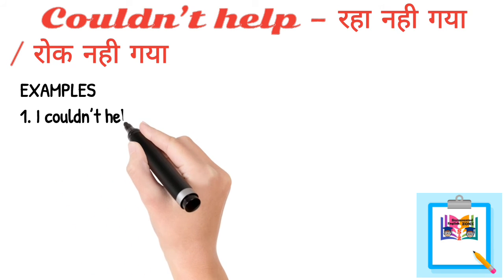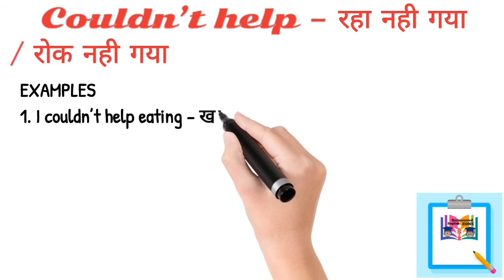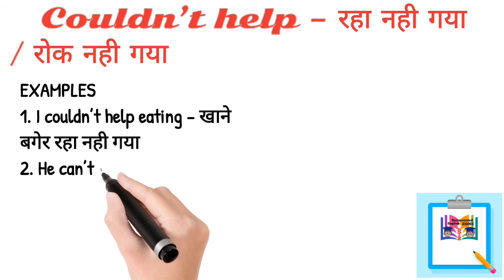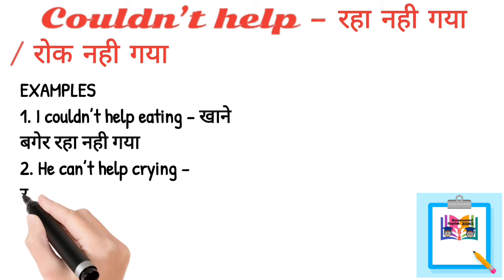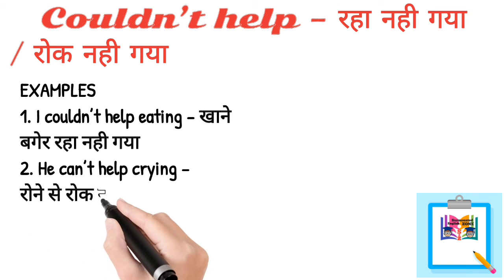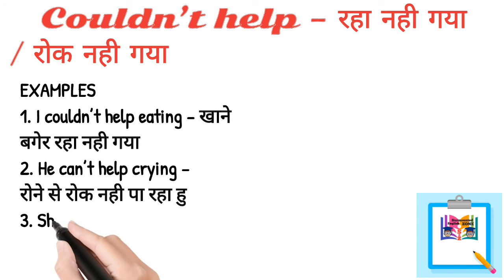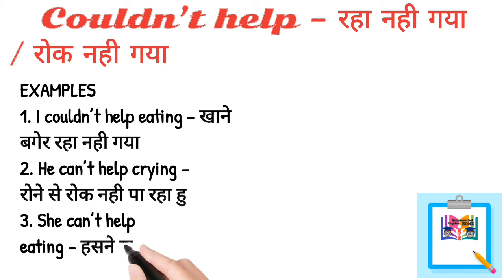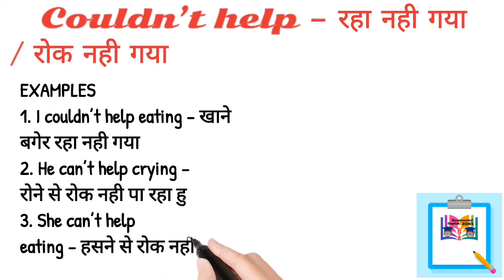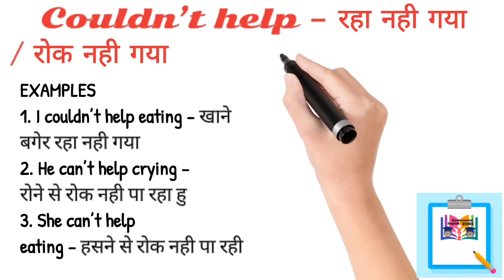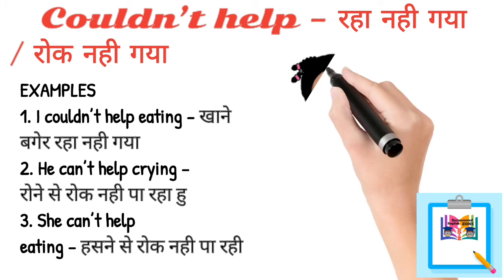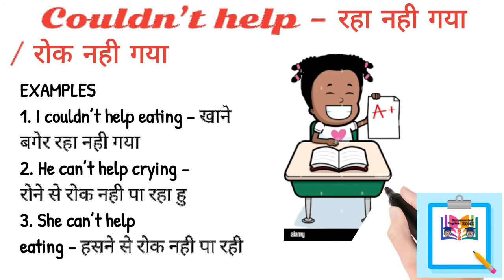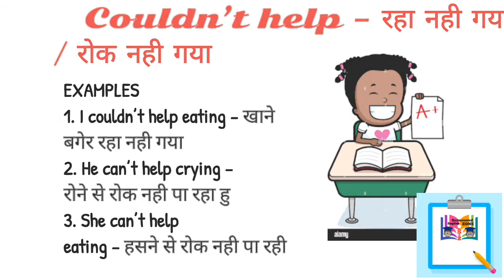I couldn't help eating — khana vagera raha nahi gaya. Number two — He can't help crying — rone se roka nahi paa raha hun. Number three — She can't help laughing — hasne se roka nahi paa rahi.